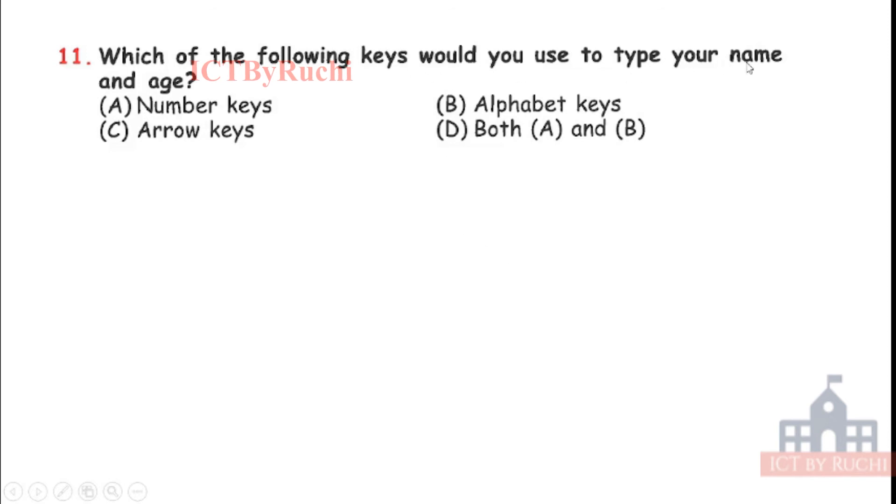Next question. Which of the following keys would you use to type your name and age? Number key, alphabet keys, arrow key, both A and B. Very easy. Tell me the answer. Answer is D, both A and B. We can type our name using alphabet keys and our age using number keys.